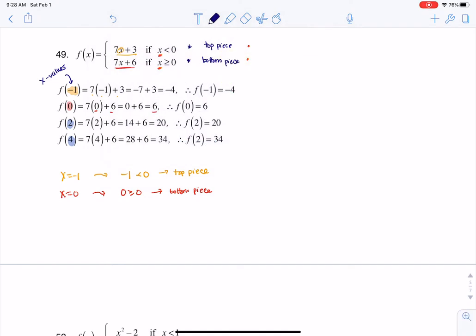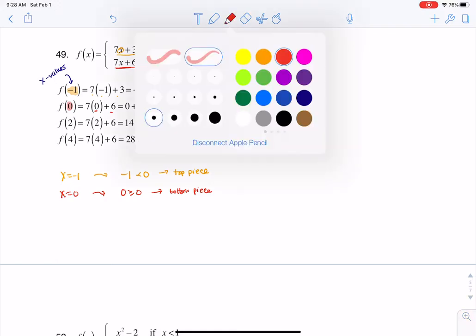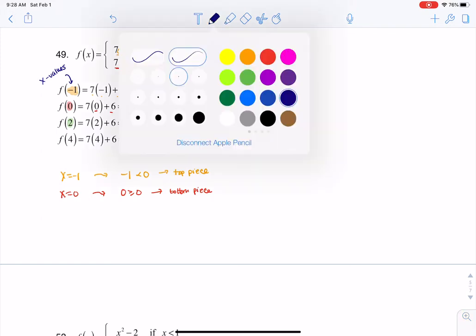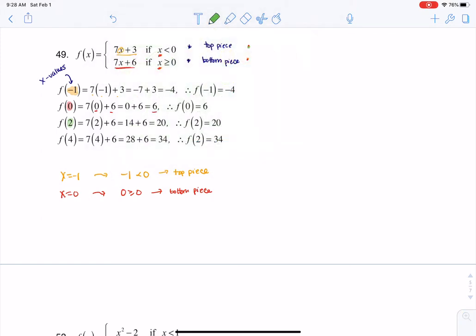So then we can keep on going through this. Let's try it with 2 and 4, and I'll keep on changing this pen color. So if I'm plugging in 2, is 2 going to send me to the top piece or the bottom piece? Well, is 2 less than 0, or is 2 greater than or equal to 0? I think you'll give me that for 2, 2 is greater than or equal to 0, so I'm going to be on the bottom piece. And that's why I'm going to plug in to 7x plus 6. So 7 times 2 plus 6 does ultimately give me 20.